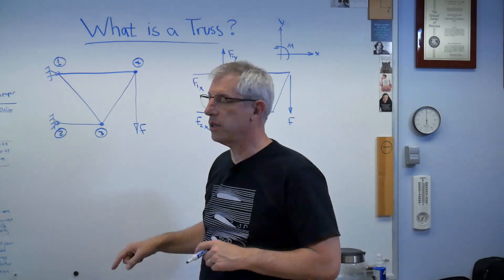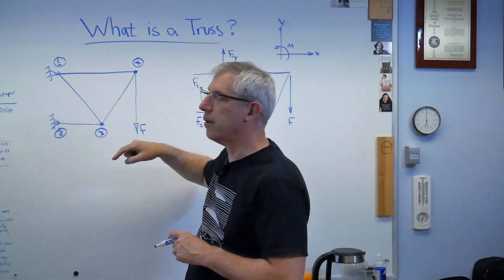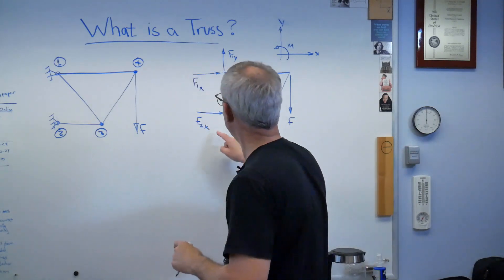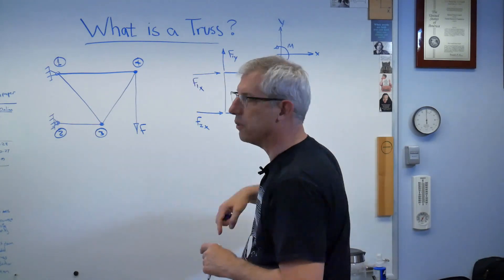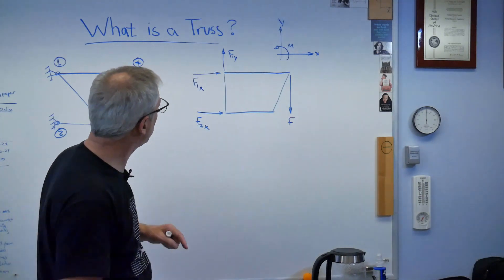And that's going to be F2X. Notice there is no F2Y. And the reason there's no F2Y is that that's pinned there and that's pinned there. Remember, this is a pinned truss. There's no moments anywhere. It's literally a pivot there. And because of that, there can't be any vertical force here. So I've only really got three forces, three external forces, reaction forces that I want to know.